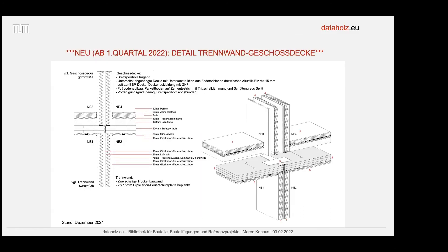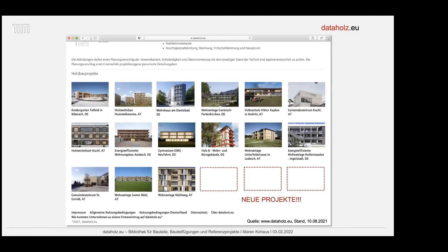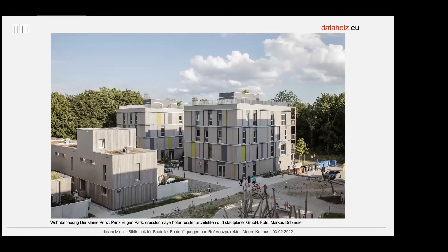Neu hinzu kommt auch der wirklich interessante Stoß von Trennwand-Geschossdecke: was muss man dort beachten, wann kommt welche Abklebung, welches Schubblech und wie wird das realisiert? Das ist ein neuer Detailpunkt, der noch mit hinzukommt. Da die Plattform immer aktualisiert werden muss, gibt es auch neue Projekte. Und das ist die Überleitung zum ULF: das Projekt von ULF aus dem Prinz-Eugen-Kart, von Dressel-Meyer-Hufer-Rössler-Architekten, diese Turmhäuser werden jetzt mit in DataHolz aufgenommen.